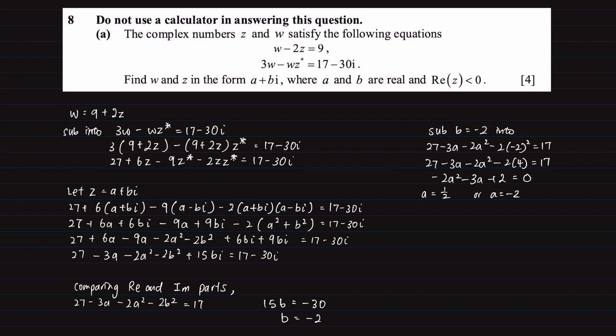Now don't forget to always answer to the question. You realize in the question that the real part of z is a negative value so we are going to reject a equals to half. Now this is not the final answer. Remember we are going to find w and z.